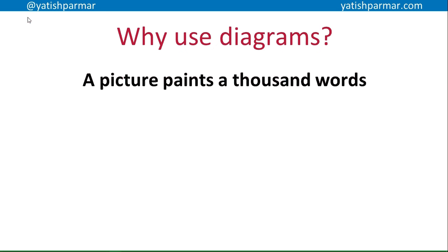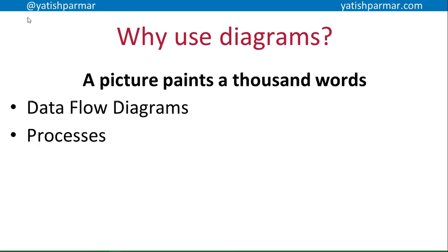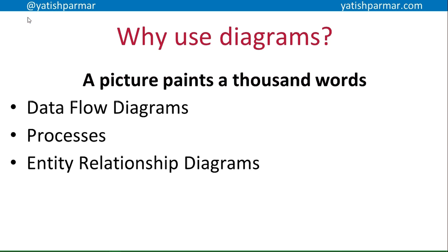So why do we bother using diagrams? A picture paints a thousand words. When you are doing any form of systems analysis, you'll come across several different diagrams. For example, data flow diagrams show how data flows around the system. You have various different forms of process diagram that show the processes taking place within the system — how tasks are actually carried out. And then you have entity relationship diagrams, which show the purpose of the system. There are entire languages just dedicated to modeling different systems from different views, for example UML, so you can fully understand what's going on within a system.